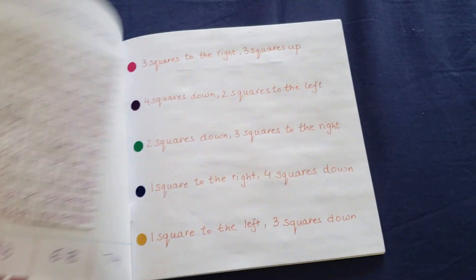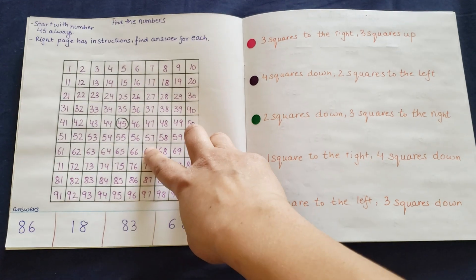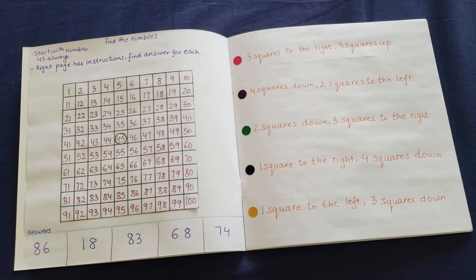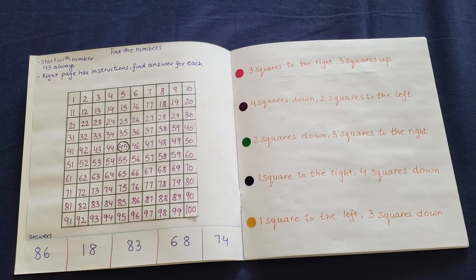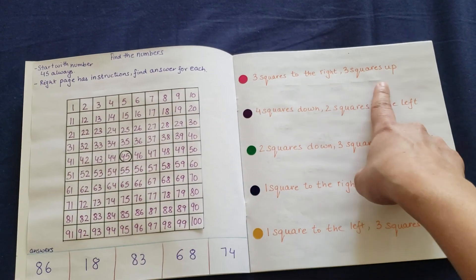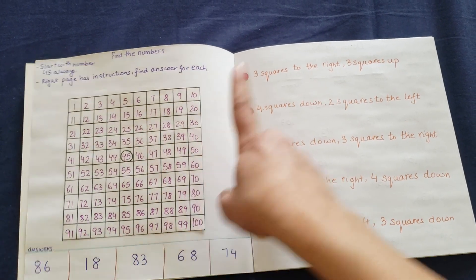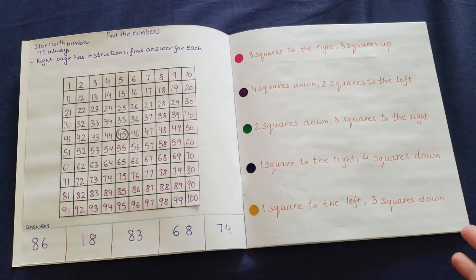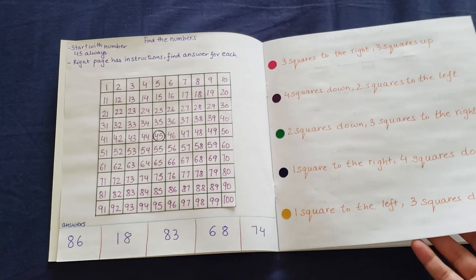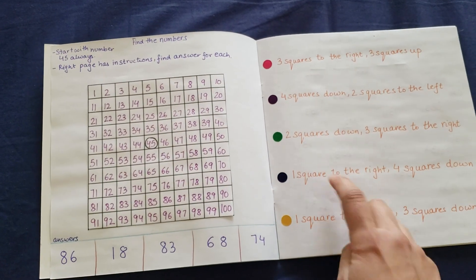The second activity is that you have to look at the numbers, start from here, and there are some statements given to you. You have to navigate your way either left or right, down or up, and then the answers are right here. So you have to figure out 3 squares to the right, 3 squares up. You go left and right and then wherever you reach, that's going to be the number here. So it's a pretty great maths plus a brain teaser activity. Everything starts from number 45 as the instruction says. So every time you do a question, you start from here.